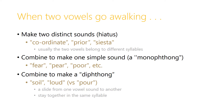The second way that two vowels can combine is to make a monophthong. In other words, the two vowels combine to make one simple sound. This is what we see in English with words like 'fear', 'pear', or 'poor', where the two vowels combine to make one sound — ee, a, or oo.